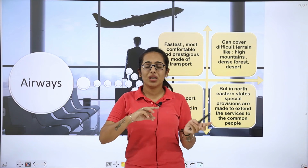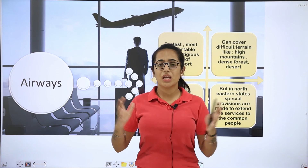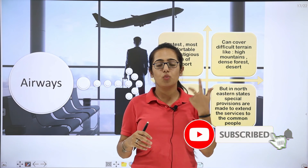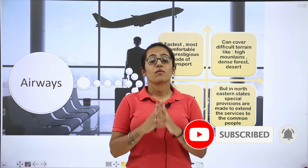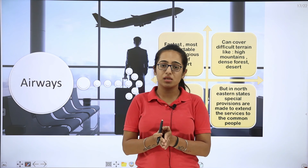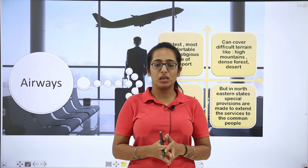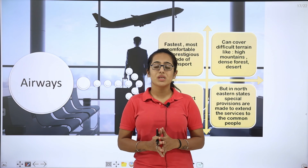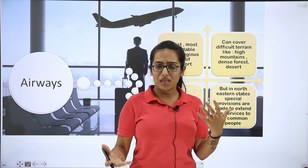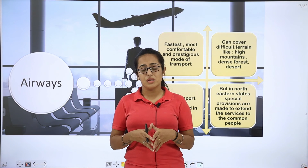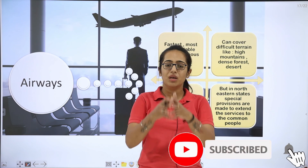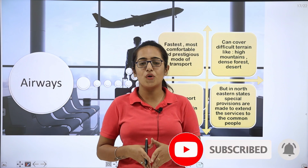So these were the features of all three modes of transportation that were remaining. Now the modes of transportation are complete — railways, roadways, airways, pipelines and waterways — features are done. You can now easily compare them on the basis of cost, landing, and export-import. These are the various bases by which you can compare these. This was all for Part 3 of the chapter, Lifelines of National Economy.